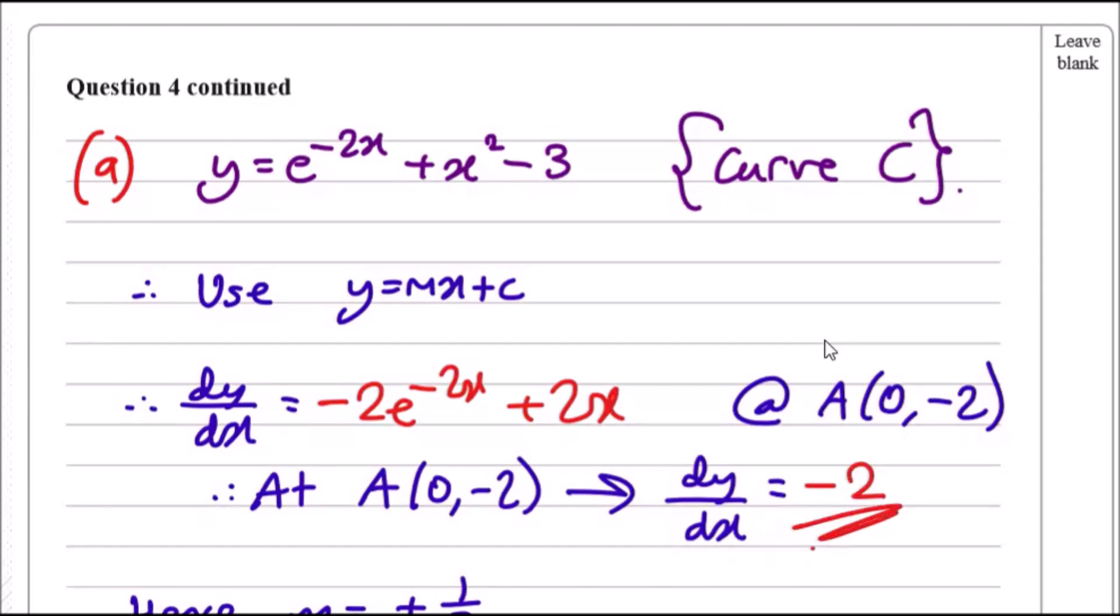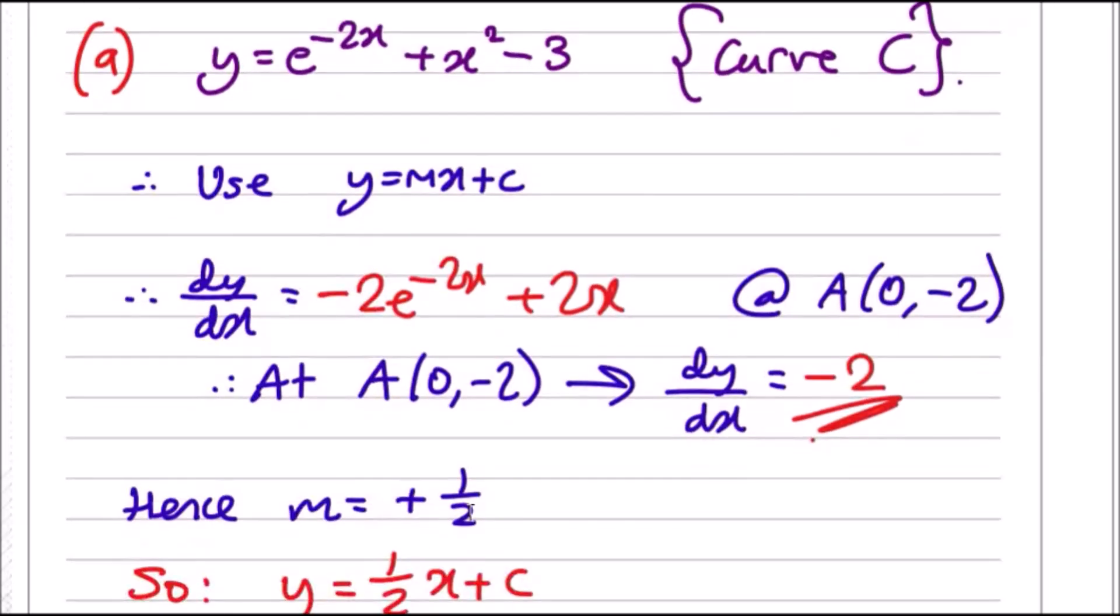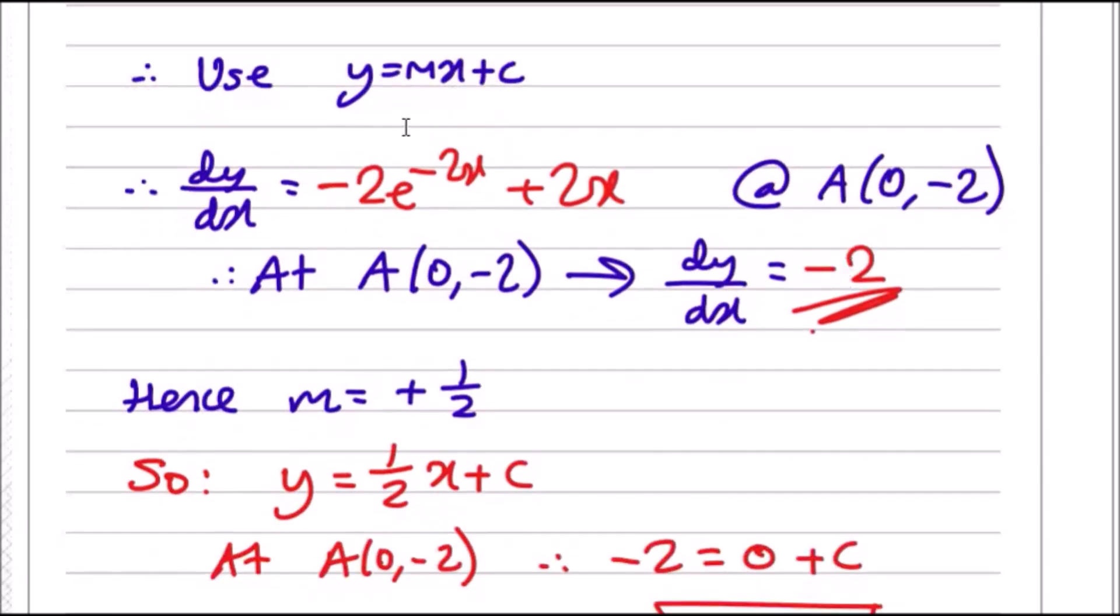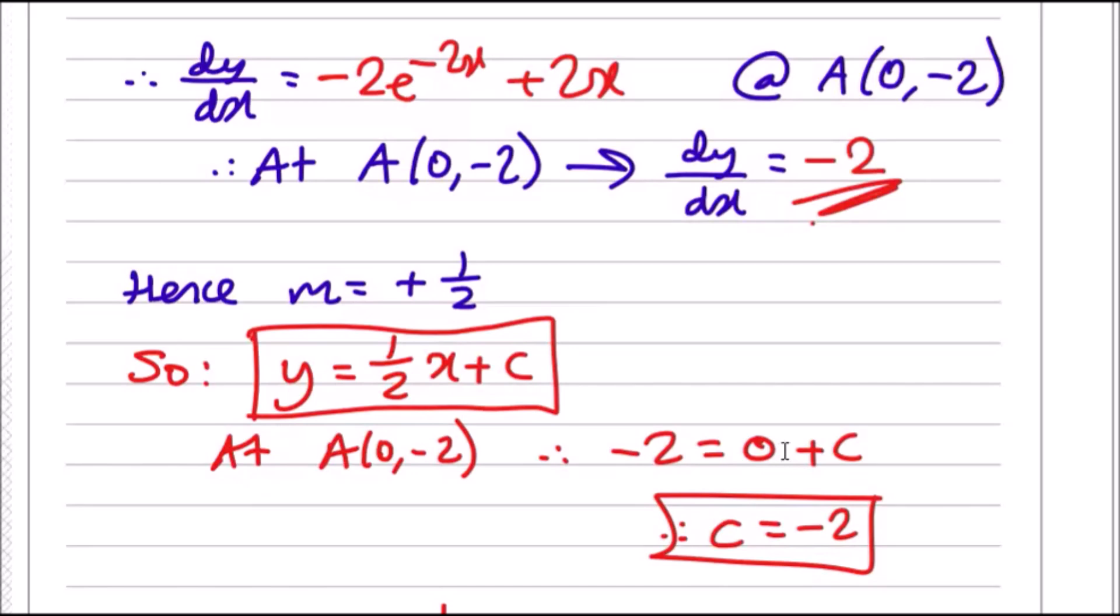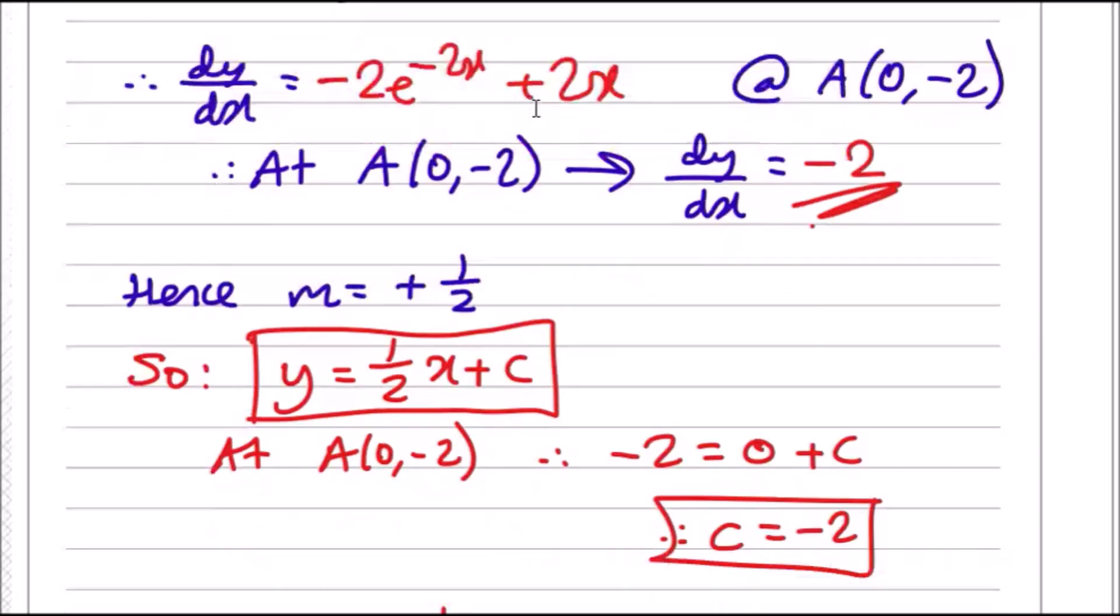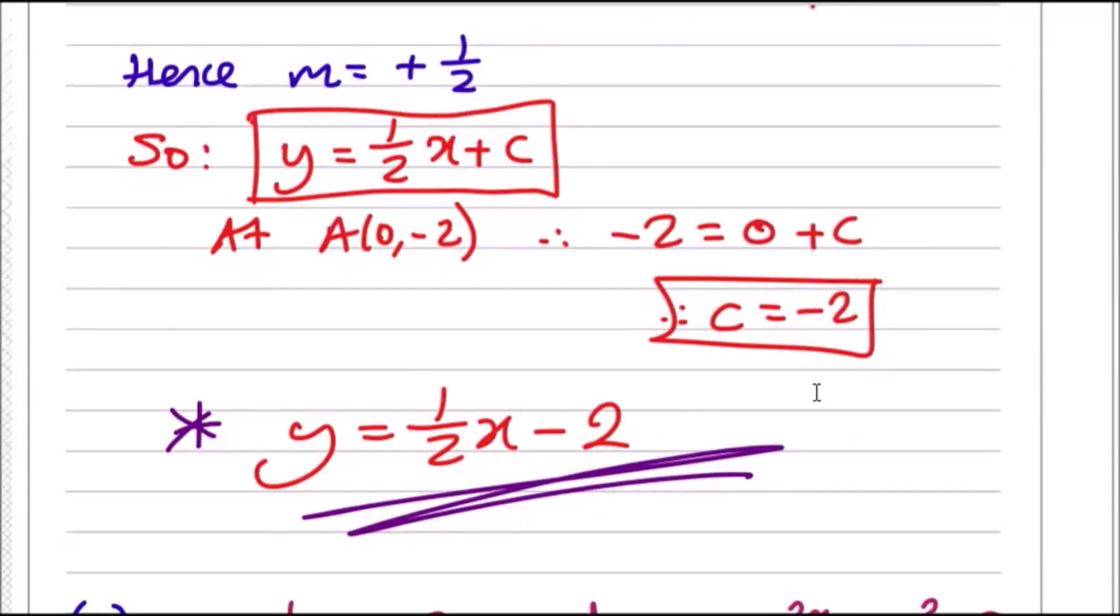This would be the gradient if it was a tangent, but because it's a normal we take the reciprocal, so it's plus one-half. For y = mx + c, replace m with positive one-half, so our equation looks like this. To find c, plug in any point on that line. We got zero, minus two. Replace x with zero, y with minus two, you should get -2 = 0 + c, therefore c = -2. Hence our final equation is y = (1/2)x - 2. That's the equation of the normal.